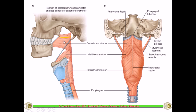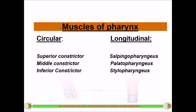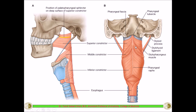The three circular constrictor muscles — superior, middle, and inferior — are seen in the posterior view. From either side they come to the midline and get inserted into the pharyngeal raphe, which extends from the pharyngeal tubercle at the base of the skull. The pharynx is totally closed from behind but deficient anteriorly because of the openings of the oral cavity, nasal cavity, and the larynx.